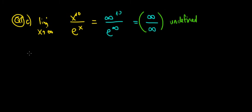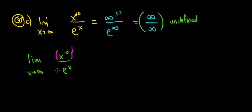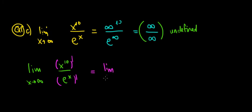Let's use L'Hôpital's rule — let's differentiate the upper side and the lower side. The limit as x approaches infinity of x to the power of 10 divided by e to the power of x. The derivative of x to the power of 10, using the power rule, brings the power down: 10 times x to the power of 9. The derivative of e to the power of x is just e to the power of x.